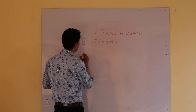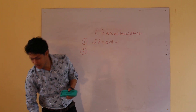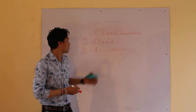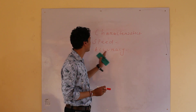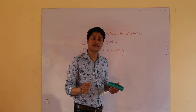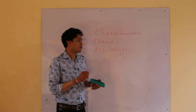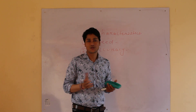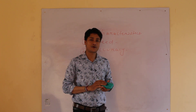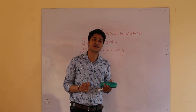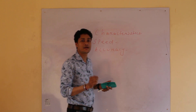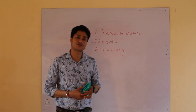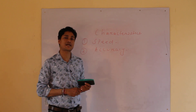The second characteristic is accuracy. Accuracy means correctness. Whenever we work with a computer, have you ever seen the computer give you the wrong result? Always the computer gives you the correct result. This characteristic of the computer is known as its accuracy characteristic. A computer system always gives us the correct result, provided our input data and instructions are correct.